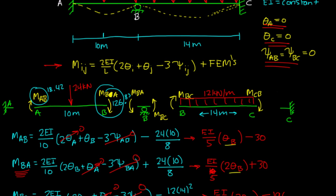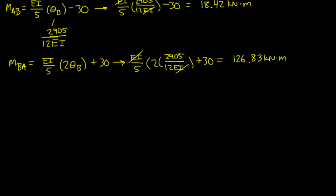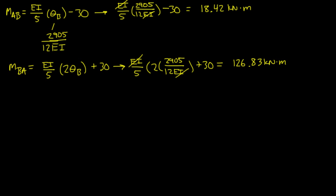And then we have M_BC, and that equation was EI over 7 times 2 theta b minus 196, right? And if we plugged in our theta b, we get EI over 7, 2 theta b was 2905 over 12EI minus 196.